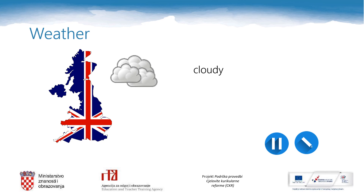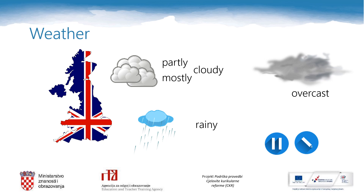Well, in many cases it is cloudy. It can be partly cloudy or mostly cloudy. It is often rainy. If it is overcast, the sky is completely covered with clouds and there is not much light. Overcast. You can pause this video lesson now and write the words in your notebooks.